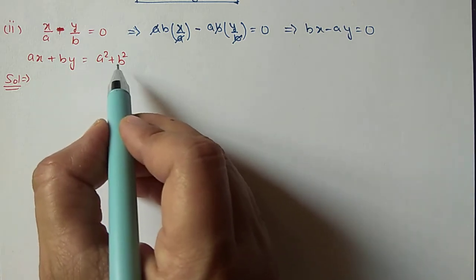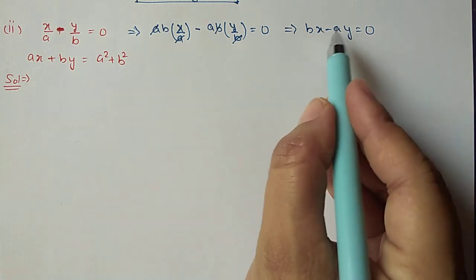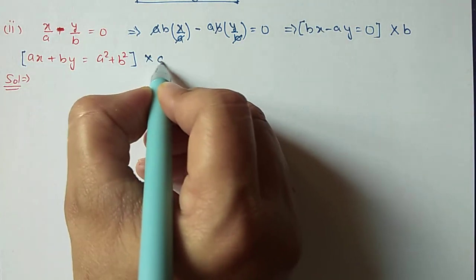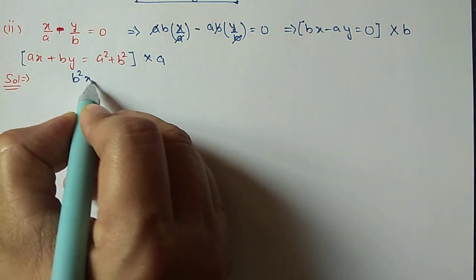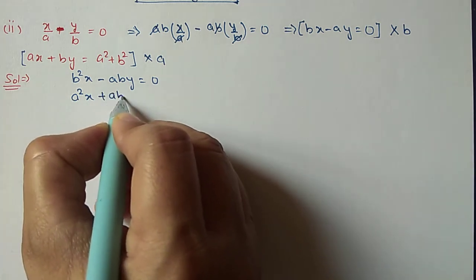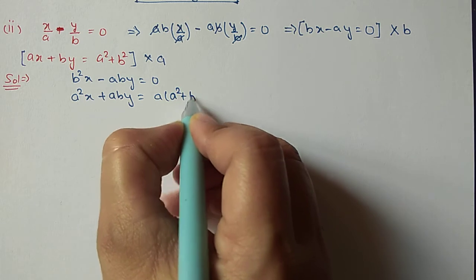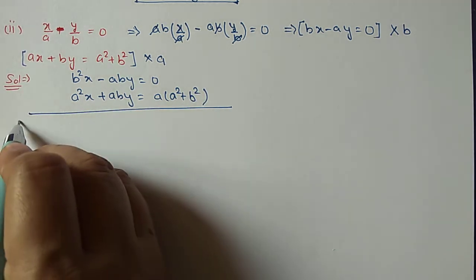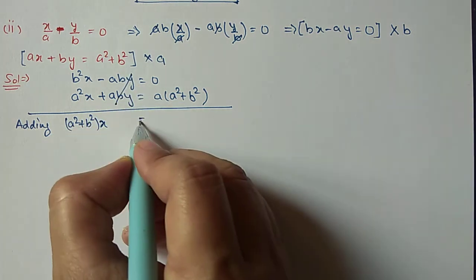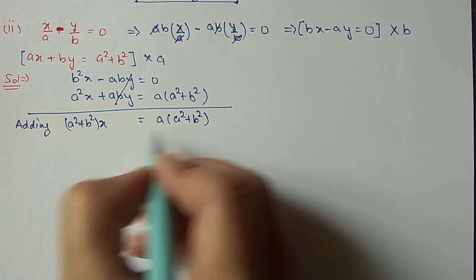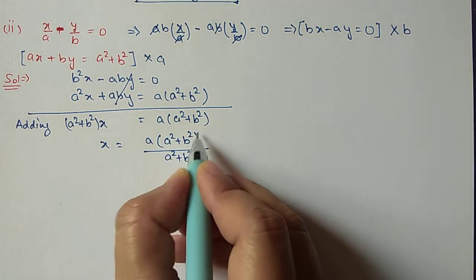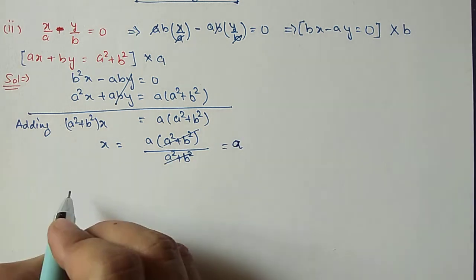The second equation is ax plus by equal to a squared plus b squared. To make the Y coefficient the same, we multiply the first equation with b and the second equation with a. It becomes b squared X minus ab·Y equal to 0, and a squared X plus ab·Y equal to a times (a squared plus b squared). Now the Y coefficient is the same, so we add. Adding equations 1 and 2 gives a squared plus b squared times X. The Y terms cancel, and we have a squared plus b squared on the right side, which we shift for division.